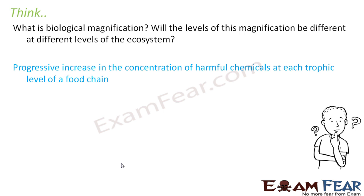Now as we saw, let us suppose if there are some harmful chemicals — normally these chemicals are non-biodegradable, which means they will not get decomposed into simpler forms. So if one organism consumed it and some other organism consumes the same organism, the quantity of that chemical keeps increasing. So the higher the trophic level, the higher is the concentration of the harmful chemical.